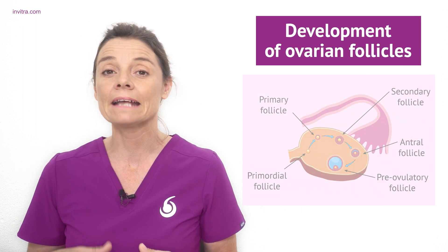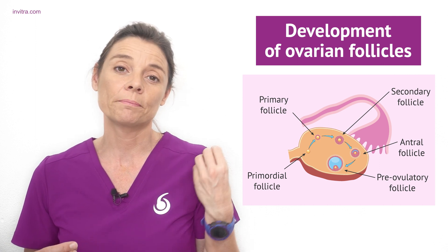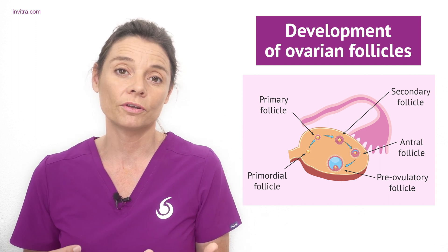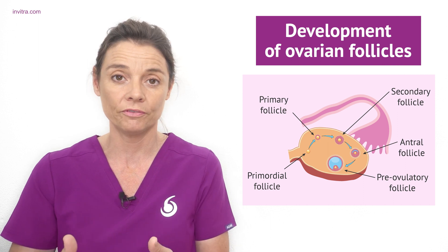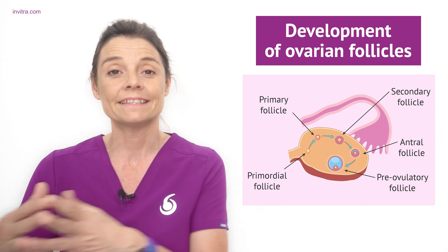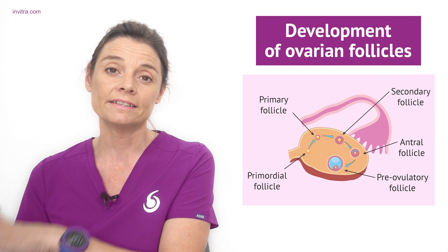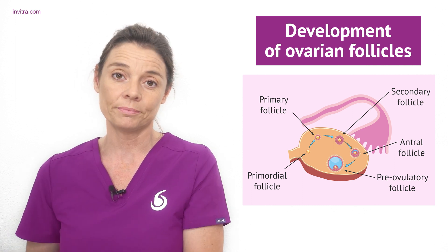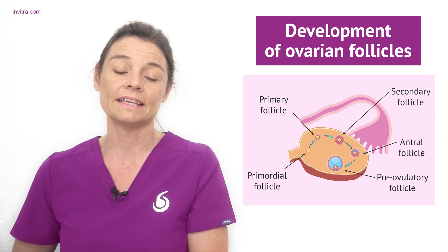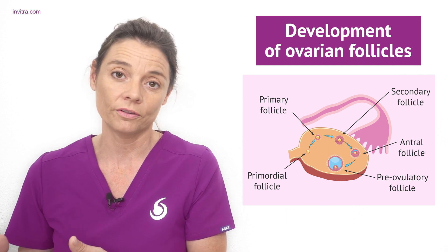The ovarian follicles pass through different stages. To start with they are a primordial follicle and begin the development process to become the primary follicle, the secondary follicle and then the tertiary follicle. This is the antral follicle. After this it becomes the pre-ovulatory follicle or the Graafian follicle and then ovulation occurs.